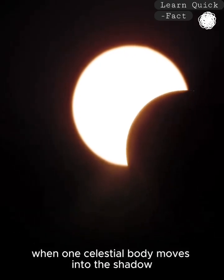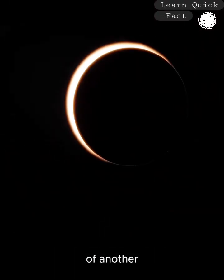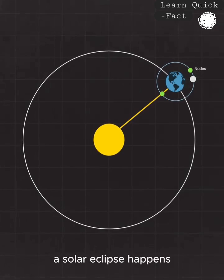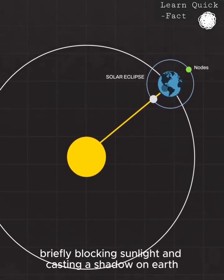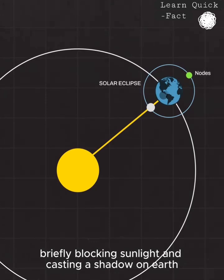Eclipses occur when one celestial body moves into the shadow of another. A solar eclipse happens when the moon passes between Earth and the sun, briefly blocking sunlight and casting a shadow on Earth.